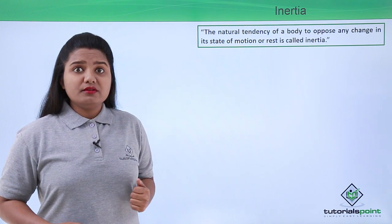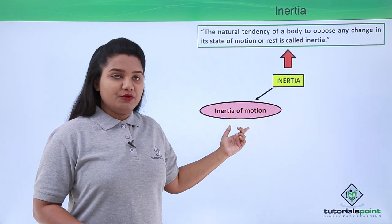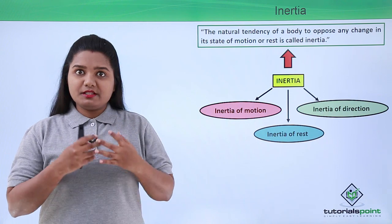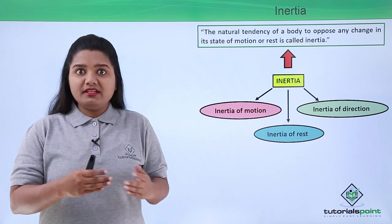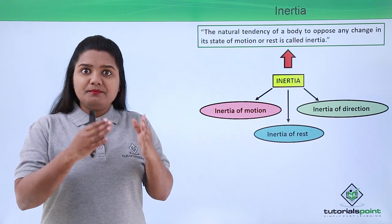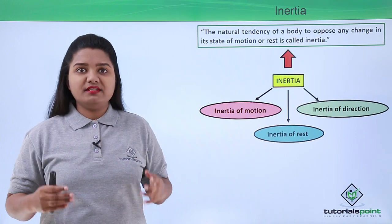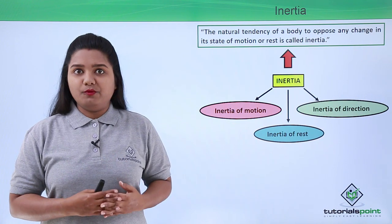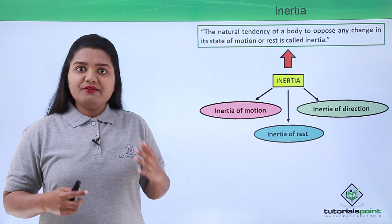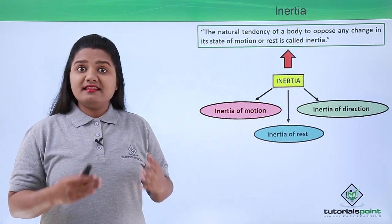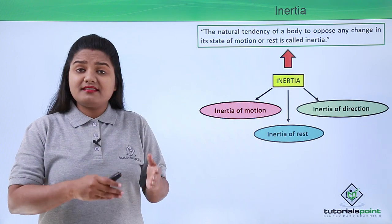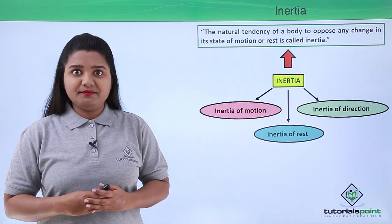We have also learned that inertia is of three types: inertia of motion, inertia of rest, and inertia of direction. Inertia is a body's property or tendency which naturally exists in it, by virtue of which it resists any change in its previously existing state. For example, if a body is at rest it resists movement, if it is in motion it resists stopping, and if moving in a particular direction it resists any change in that direction.